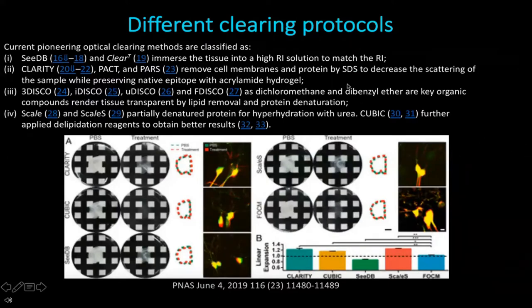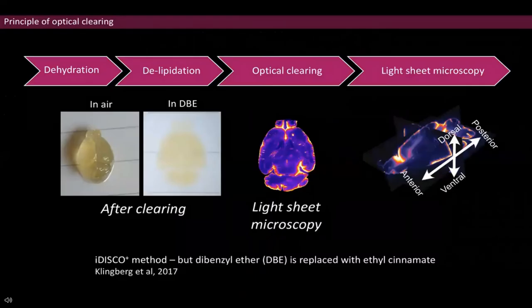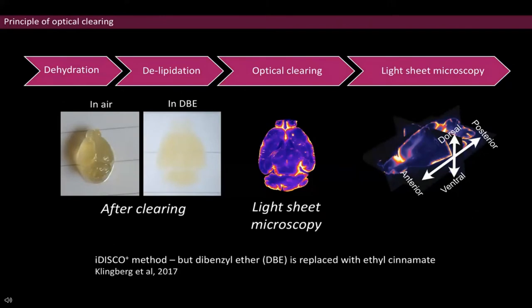We have substituted one chemical in the protocol. The general steps consist of just changing solutions, so it's a very easy method. We have substituted dibenzyl ether for ethyl cinnamate, as ethyl cinnamate has the same refractive index but is non-toxic—actually, it's used as a food additive.